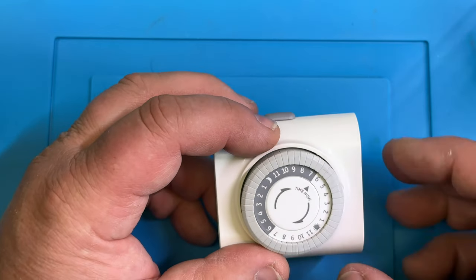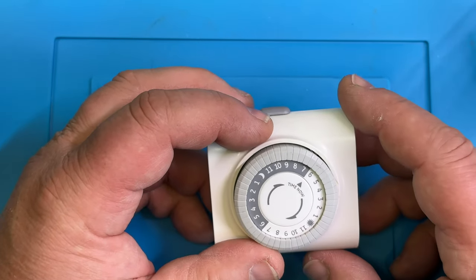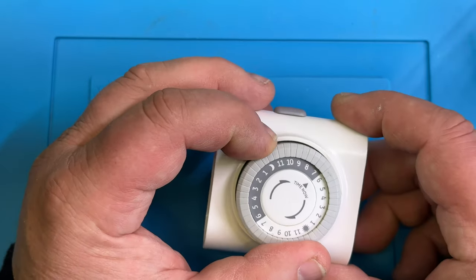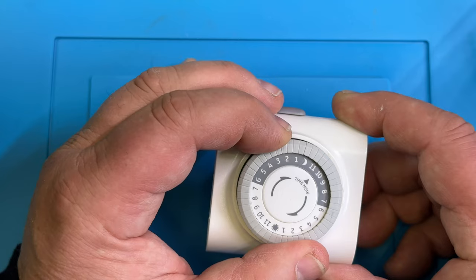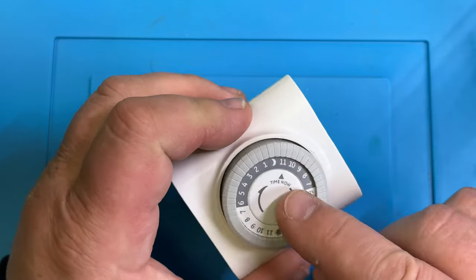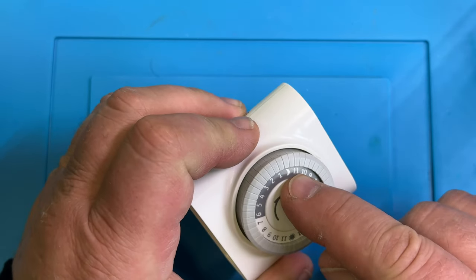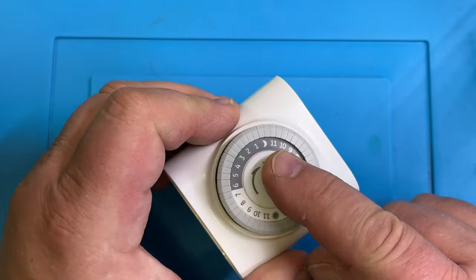You want to set the time. So for right now, let's say it's 11 o'clock at night. You would turn the timer around until this 'time now' arrow points at the time. So in this moment it would be 11 o'clock.